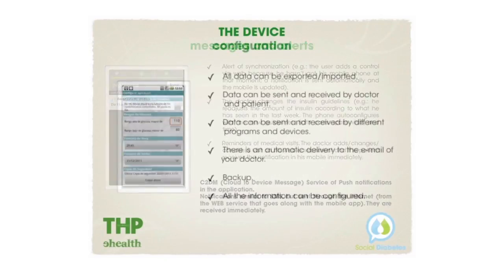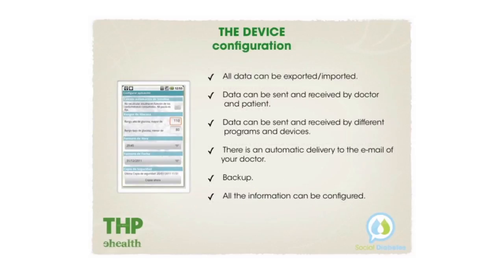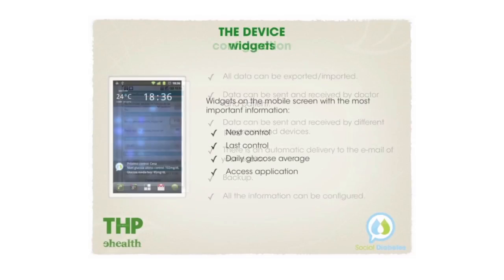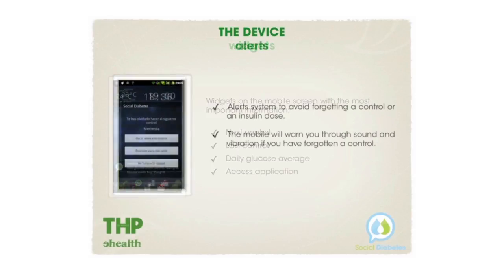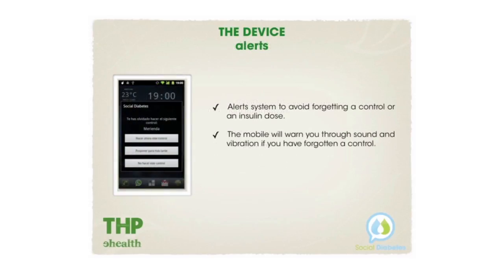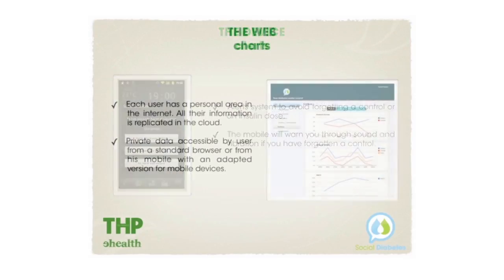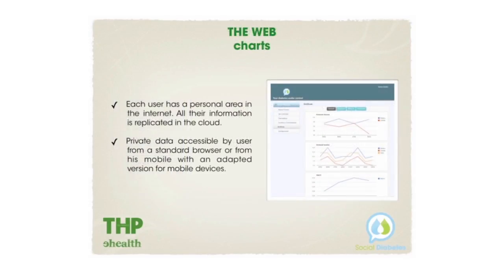Social Diabetes takes the treatment pattern determined by the doctor and recalculates the recommended dose after considering the parameters together with changes in the patient's vital signs.